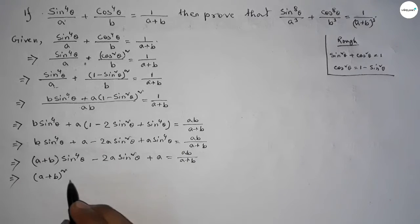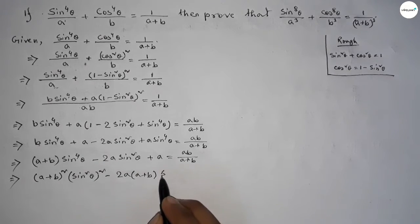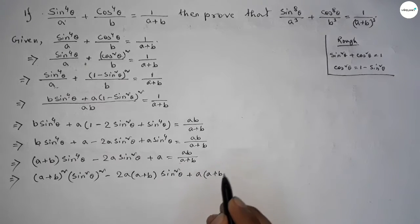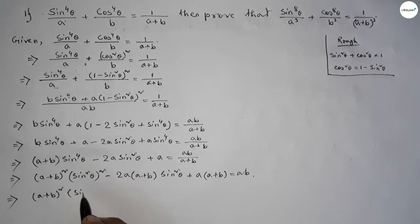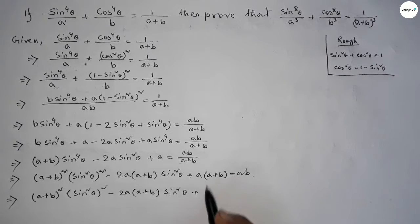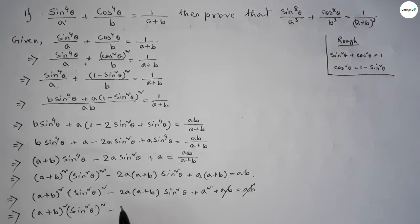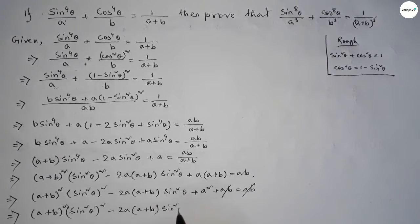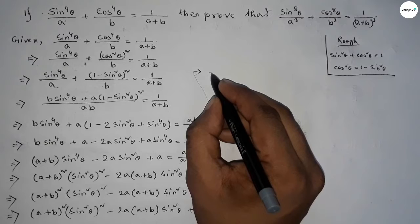Multiplying both sides by (a+b): (a+b)²·sin⁴θ − 2a(a+b)·sin²θ + a² = ab. Cancelling ab terms: (a+b)²·sin⁴θ − 2a(a+b)·sin²θ + a² = 0. This is a quadratic equation in sin²θ.